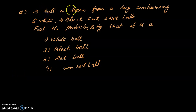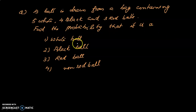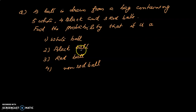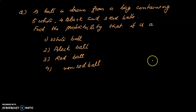A ball is drawn from a bag containing five white, four black, and three red balls. Find the probability that it is: first, a white ball; second, a black ball; third, a red ball; fourth, a non-red ball.